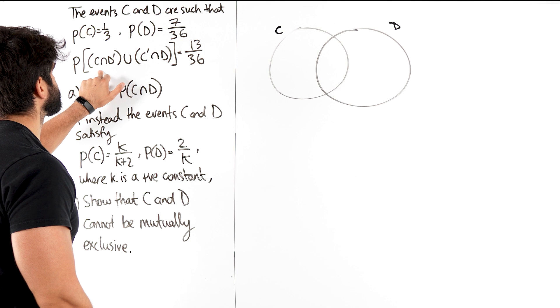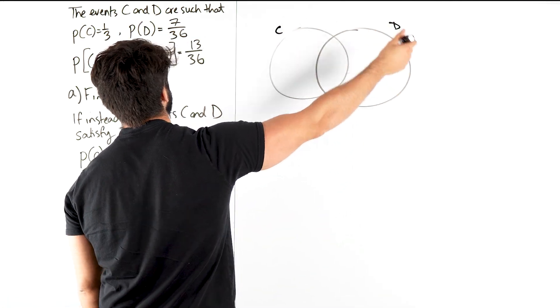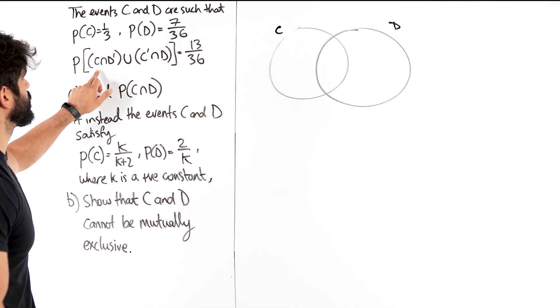Now what does this mean, C and not D? So obviously they've told us the probability of C is a third, probability of D is 7 over 36. C and not D.